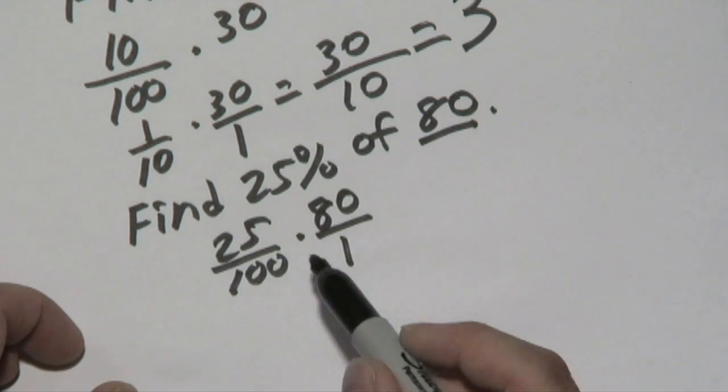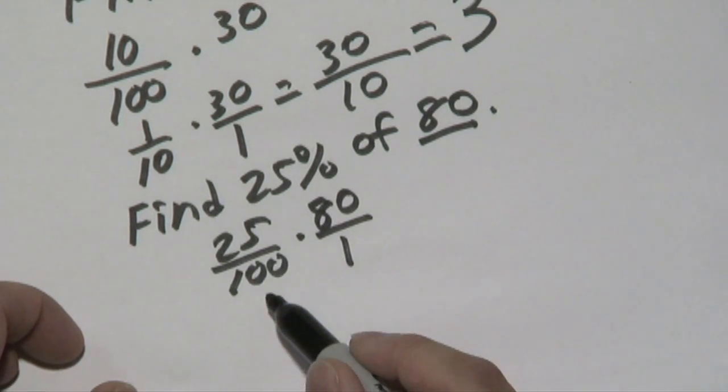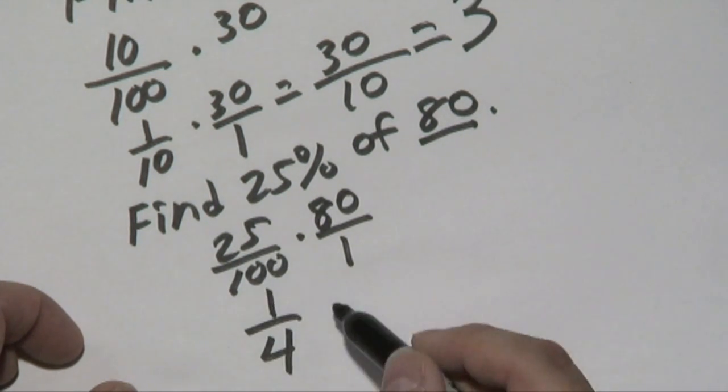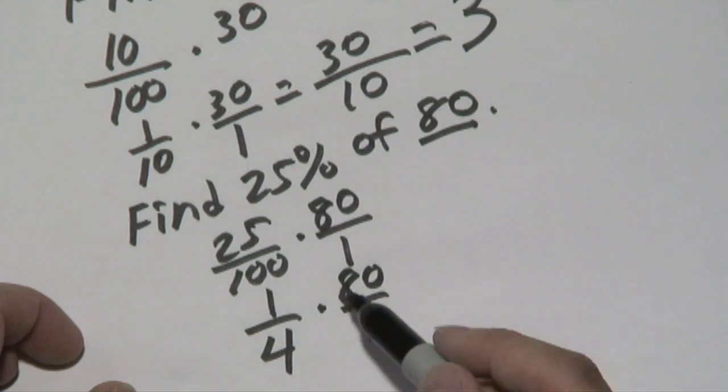Now, 25 over 100, yes, it is reducible by 25. So 25 over 100 is 1 over 4, and then times 80 over 1. And again, if you like, you can multiply across.